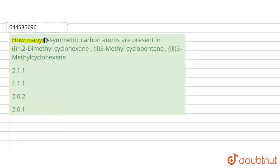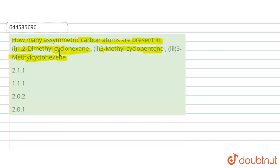The question is: how many asymmetric carbon atoms are present in — first, 1,2-dimethylcyclohexane; second, 3-methylcyclopentene; and third, 3-methylcyclohexane. We have to find out the asymmetric carbons in each of these molecules.